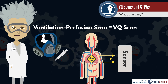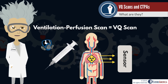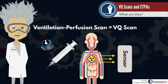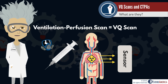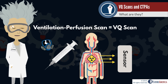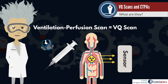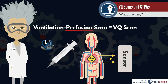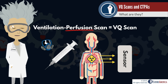The perfusion phase of the test creates images in a similar manner, but in this phase the radioactive compound is intravenously injected. This allows for an image that shows blood flow or perfusion rather than ventilation. Since pulmonary embolism affects blood flow, the perfusion phase of the scan is the major focus.